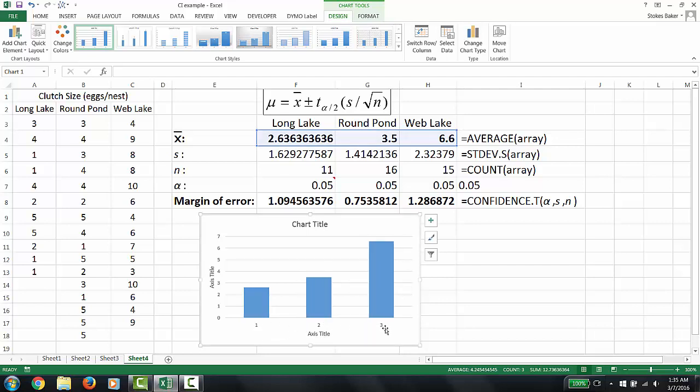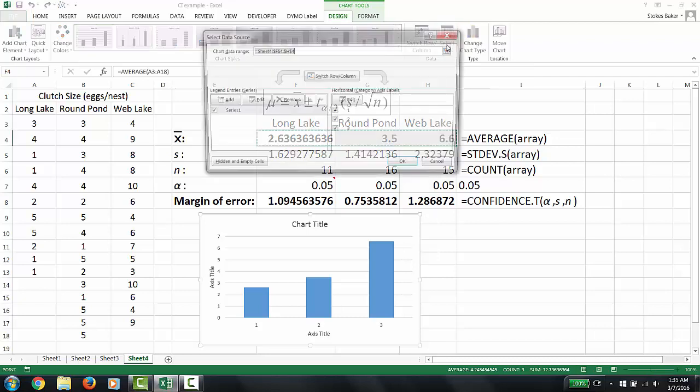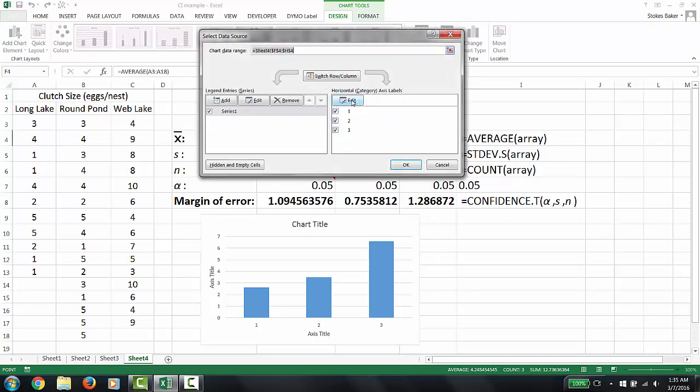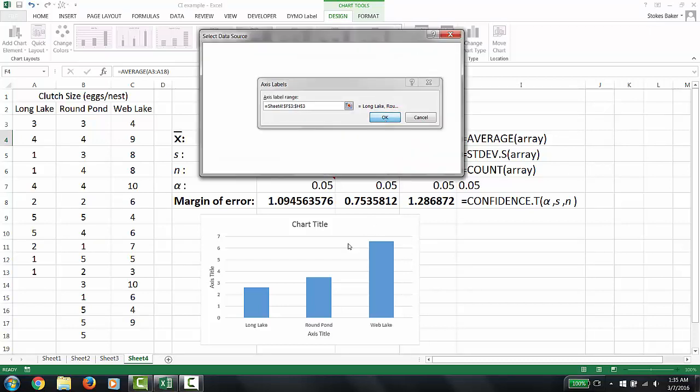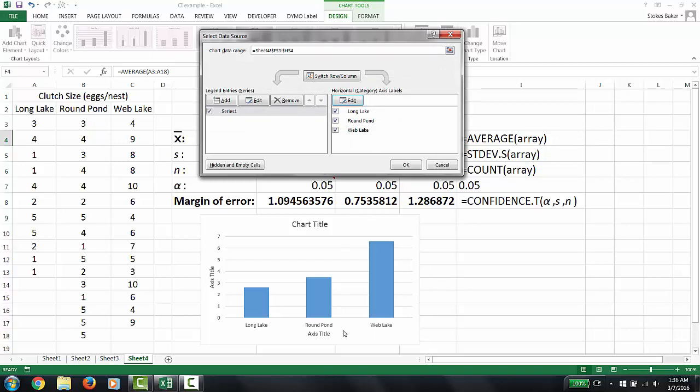To change the values under the x-axis so it's the name of our populations instead of the default values of 1, 2, 3, I'm going to click the select data button. I'm going to click the edit button on the right hand side and I'm going to highlight the cells that contain my labels. And voila, properly labeled.